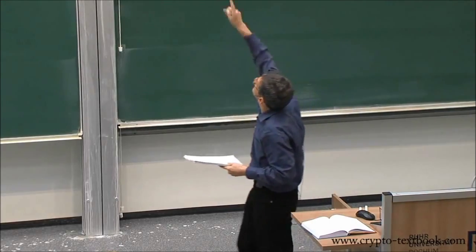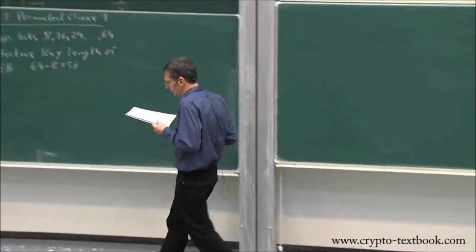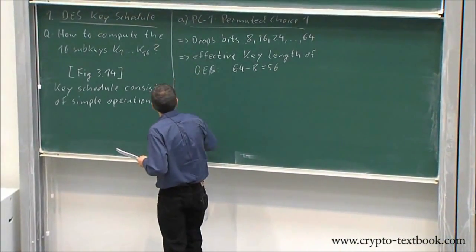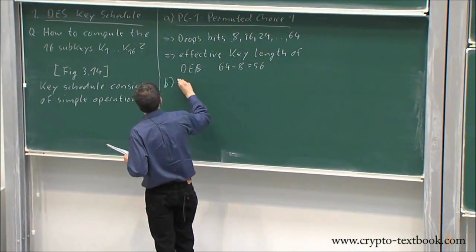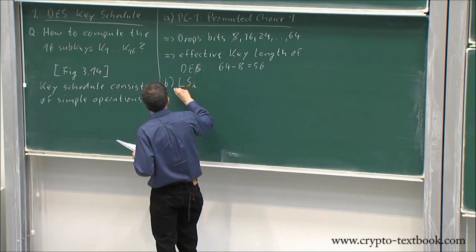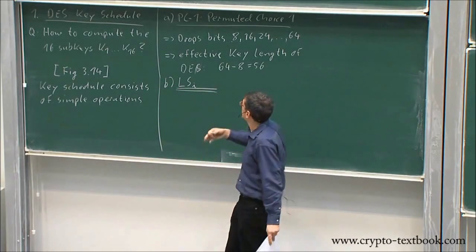And what happens then is you see this thing LS1. Okay, so that's the next element we want to discuss. That would be number B, LSI I call that, because then I runs through—LSI runs 1, 2, 3, up to 16.